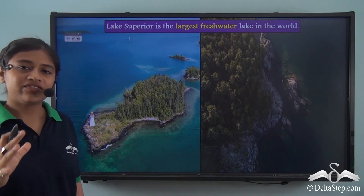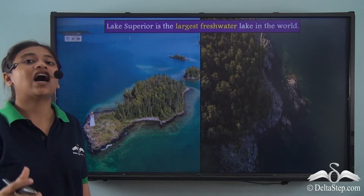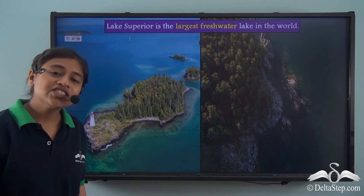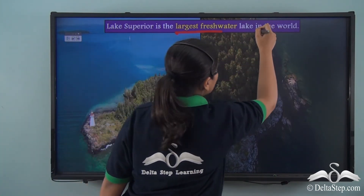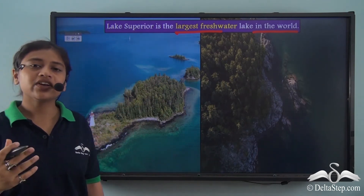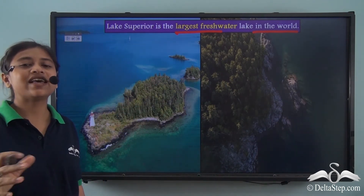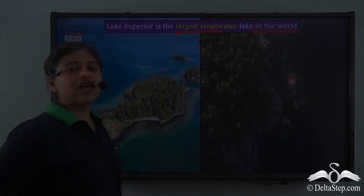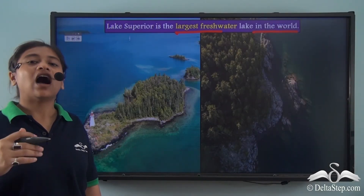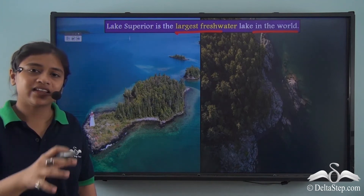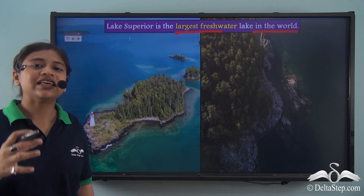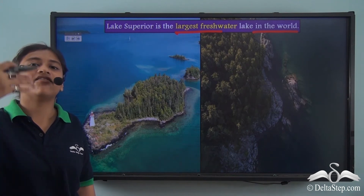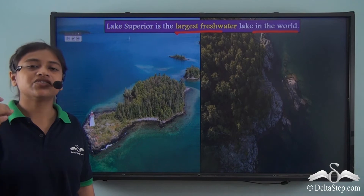Out of the five lakes, Lake Superior is the second largest lake in the world by surface area after the Caspian Sea; however, it is the largest freshwater lake in the world. These lakes are very beneficial for the surrounding region, which has industrially and agriculturally developed over the years, making it an important region of the continent.